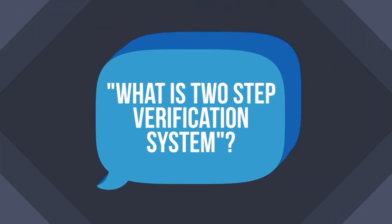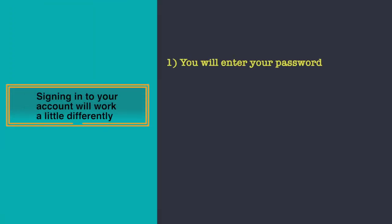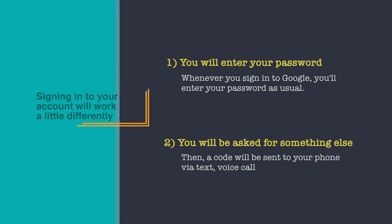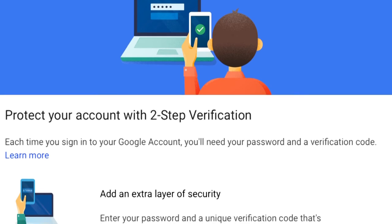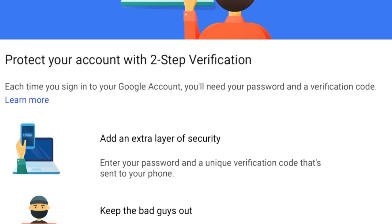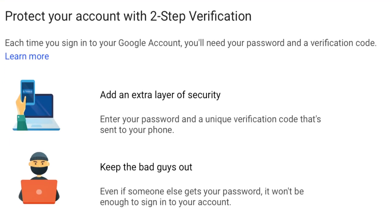In a two-step verification system, anytime an unknown device is used to sign into your Google account, the user has to provide a verification code in addition to the password. It's not enough for hackers to just get your password — they will also need physical control of your phone or computer to access your account.